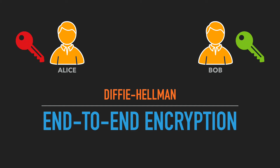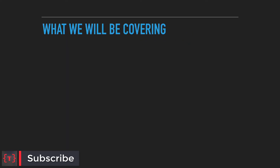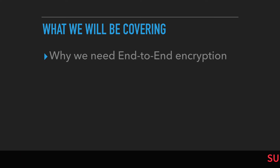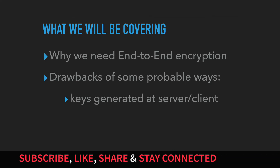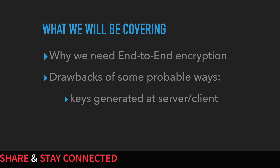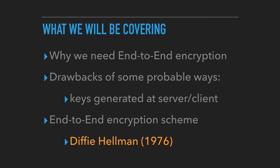Welcome back. In this video we will be talking about end-to-end encryption. We will be covering: why we need end-to-end encryption, the drawbacks of generating a public and private key at the client side or the server side, and finally the end-to-end encryption scheme proposed by Whitfield Diffie and Martin Hellman in 1976.